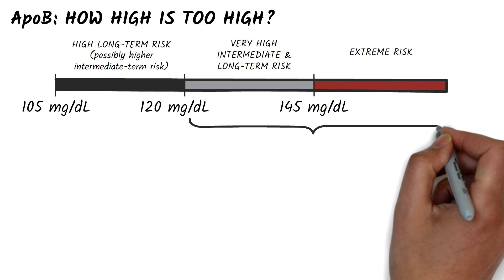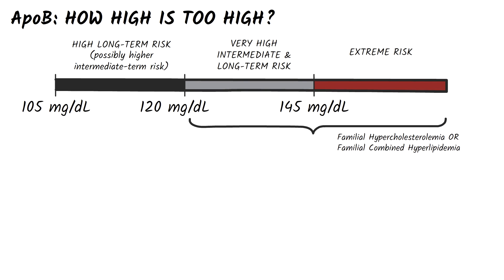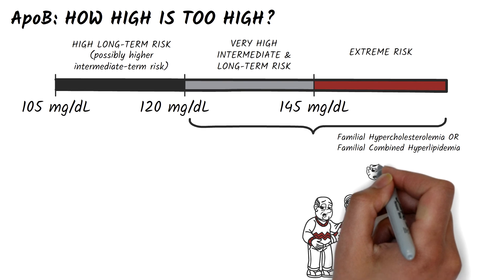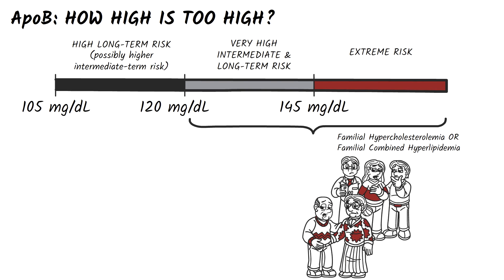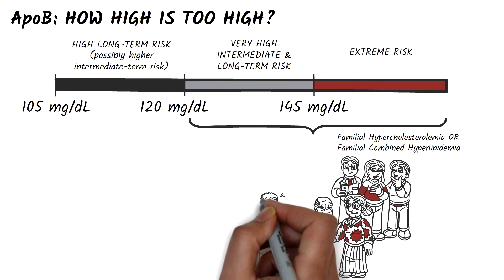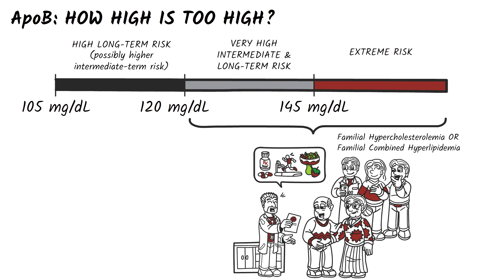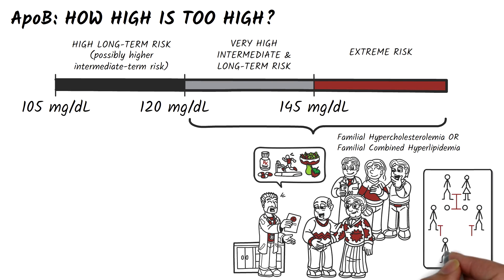If your patient falls into either of the first two categories, you may be looking at a case of familial hypercholesterolemia or familial combined hyperlipidemia. What should you do? Recommend lifestyle and diet improvements, treat the patient pharmacologically as long as there is no contraindication such as pregnancy, and do cascade screening of family members to see if they're affected as well.